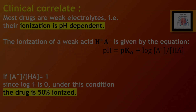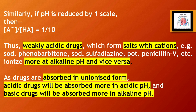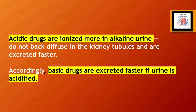If pH is reduced by one unit, then the concentration of ionized to un-ionized acid equals 1/10. Weakly acidic drugs which form salts with cations — e.g., sodium phenobarbitone, sodium sulfadiazine, potassium penicillin G — ionize more at alkaline pH and vice versa. Since drugs are absorbed in un-ionized form, acidic drugs are absorbed more at acidic pH and basic drugs at alkaline pH. Acidic drugs ionized more in alkaline urine do not back-diffuse in kidney tubules and are excreted faster; similarly, basic drugs are excreted faster if urine is acidified.